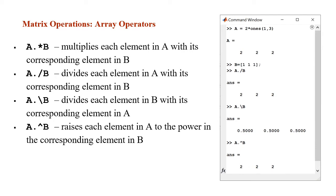If we type the left division array operator a dot backslash b, the result is each element in b divided by its corresponding element in a — so one divided by two for each element — resulting in an array of size one by three whose elements are all one half. Finally, a dot power b raises each element in a to the power of the corresponding element in b: two raised to the power one for each element, which is simply equivalent to matrix a itself.